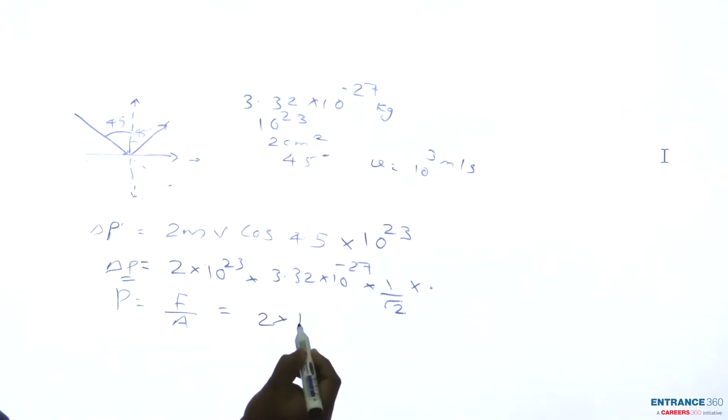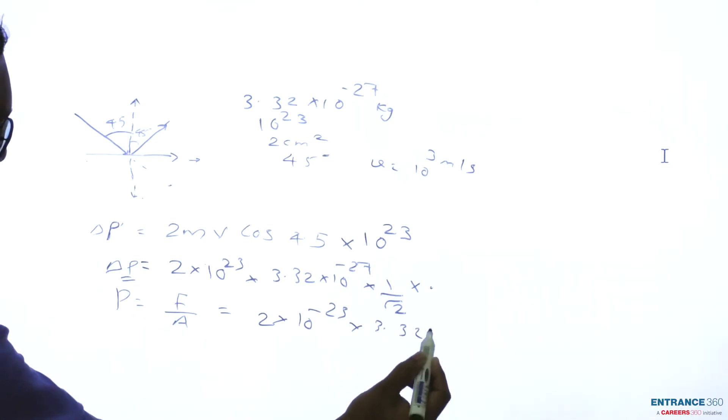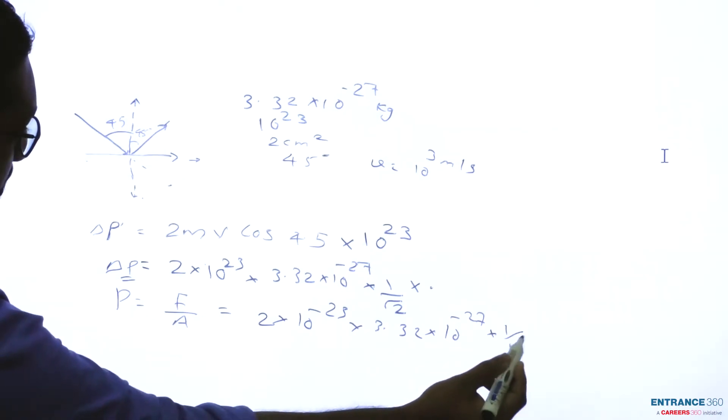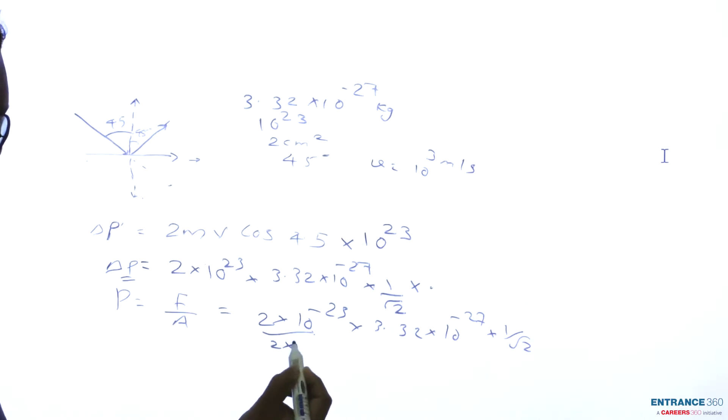Area is 2 × 10^23 × 3.32 × 10^-27 × 1/√2 divided by area which is 2 × 10^-4. Upon calculation, 2 and 2 will cancel out.